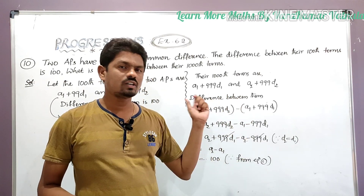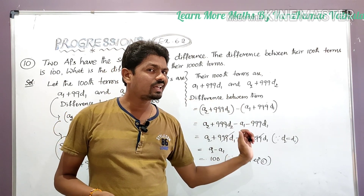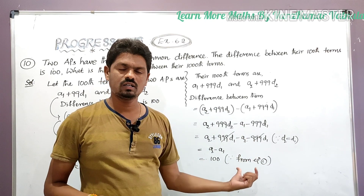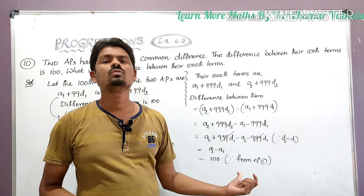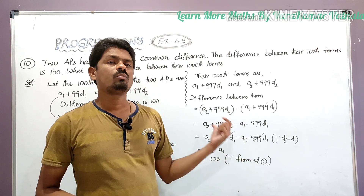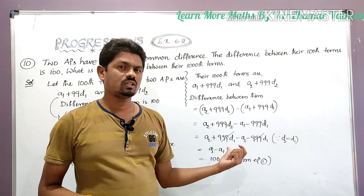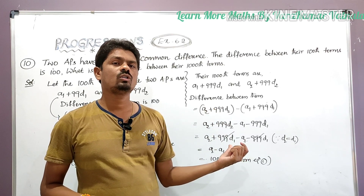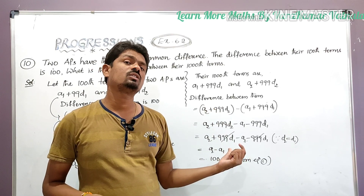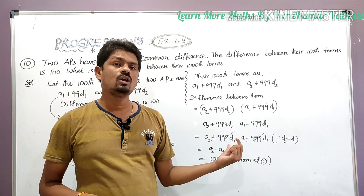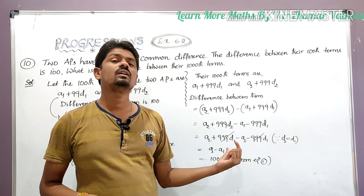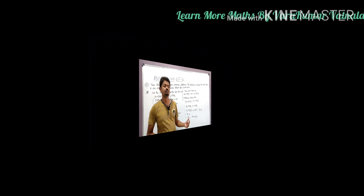The difference between their thousandth terms is also 100. This is how we can solve problems from the chapter Progressions — very easy! If you are watching my videos for the first time, please subscribe to my channel, Learn More Math by Varakumar. That's all for today's class; we will meet in the next class with another problem.